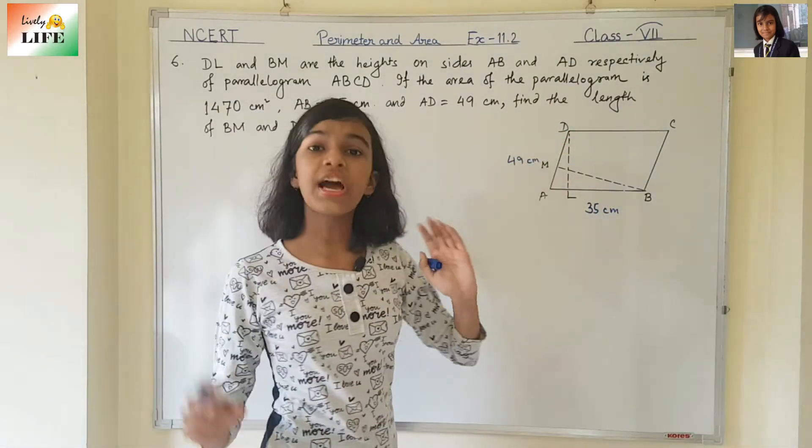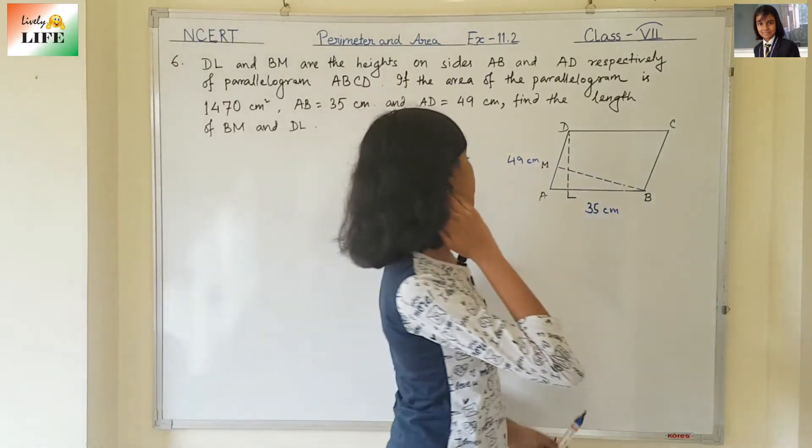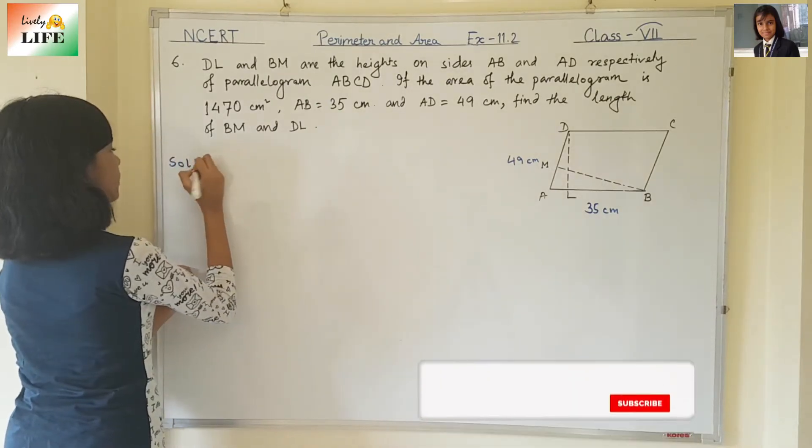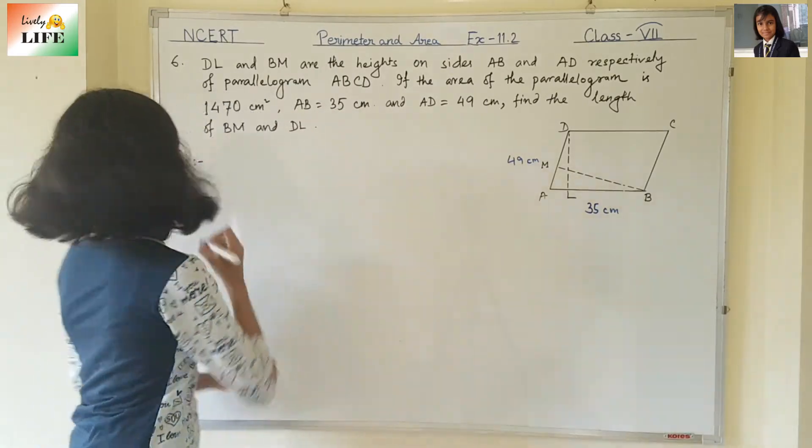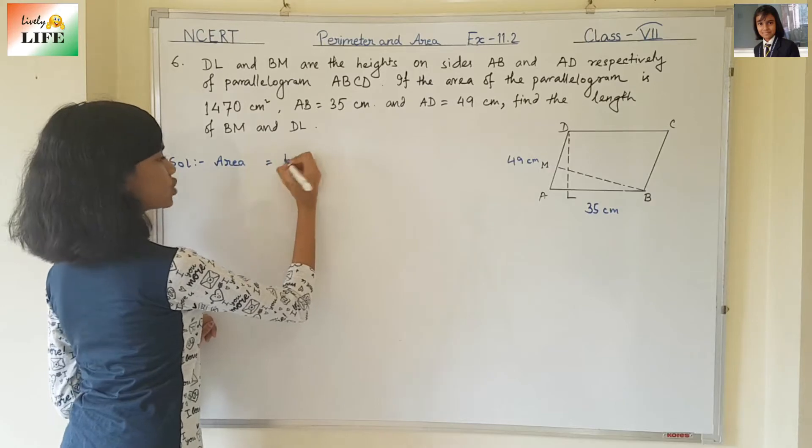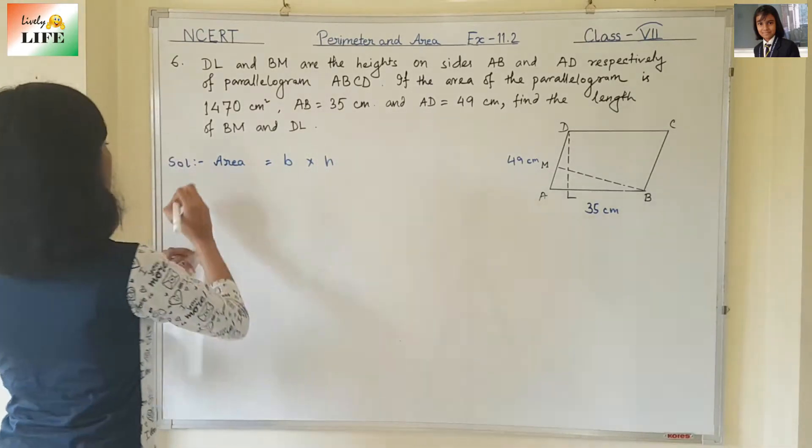Find the length of BM and DL. We need to find the length of the heights. First, we know the area. What is the formula of area of parallelogram? It is base into height. Area is equal to base into height, where B is base and H is height.